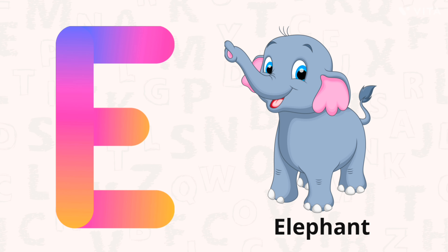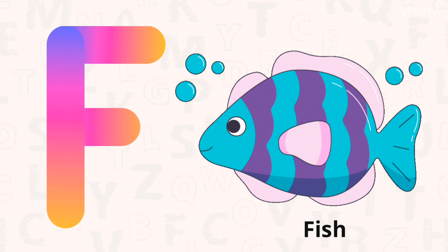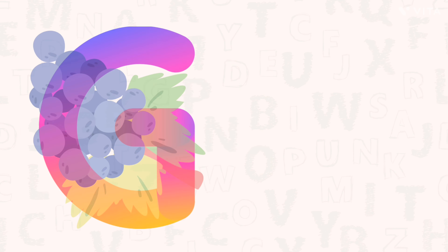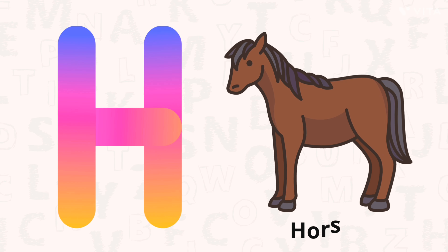E for Elephant. F for Fish. G for Grapes. H for Horse.